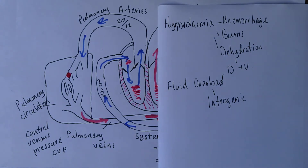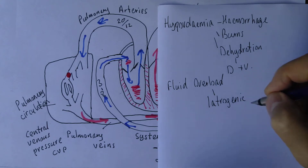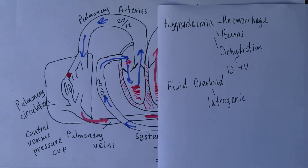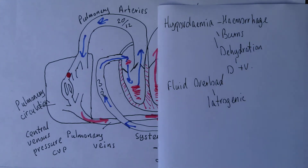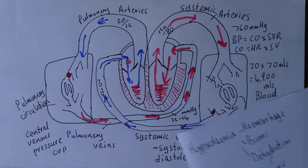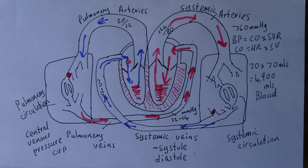Iatros is the Greek word for doctor; genic means to begin — so iatrogenic literally means something that begins with the doctor. We need to make sure we give the right amount of intravenous fluids.